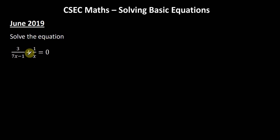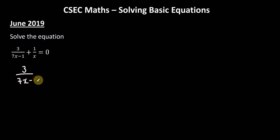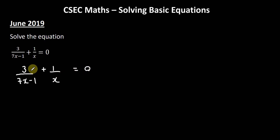Now looking at the question from the June 2019 paper, which requires us to solve this equation. It might appear complex but it's not so bad. I'm going to rewrite it: we have 3 divided by the expression (7x minus 1), plus 1 divided by x, is equal to 0.